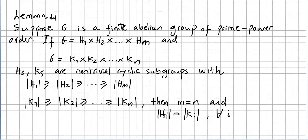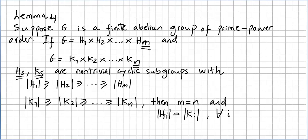Lemma 4: suppose G is a finite abelian group of prime power order. If G equals the direct product H1 times H2 times ... times Hm, and also equals K1 times K2 times ... times Kn, where all the H's and K's are non-trivial cyclic subgroups with H1 ⊆ H2 ⊆ ... ⊆ Hm and K1 ⊆ K2 ⊆ ... ⊆ Kn, then m equals n and the order of Hi equals the order of Ki. The proof of this lemma will be left for the next video.